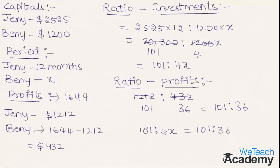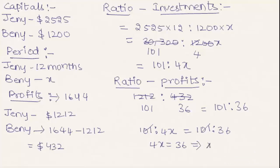We can cancel 101 on both sides, giving us 4X = 36. Transferring 4 to the other side, X = 36 divided by 4. Since 4 times 9 equals 36, Benny's investment period is 9 months. Hope you understood the concept — do like and subscribe to VTCHAcademy.com. Thanks for watching, have a nice day!